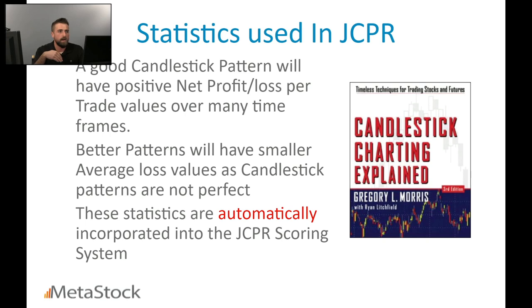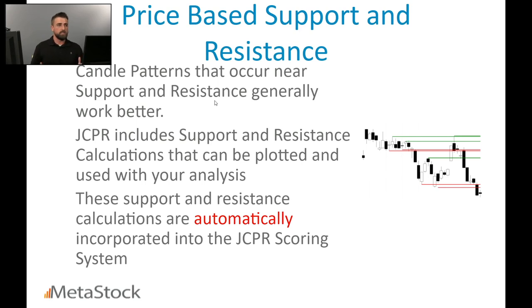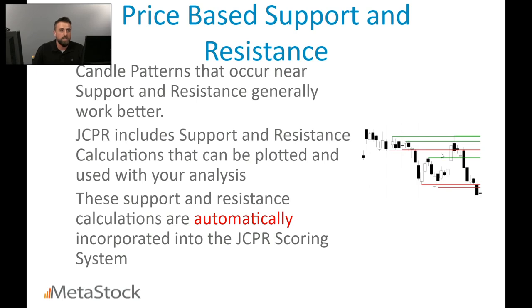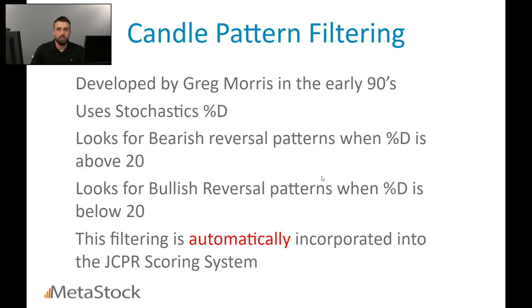He's looking for things that have a higher net profit and a smaller loss per trade. The add-on also uses unique support and resistance levels that it automatically draws on your charts. You can see on screen it has automatically placed different support and resistance levels. When a candlestick pattern comes right off one of these levels, that can mean a stronger indication of price movement. This is automatically incorporated into the scoring system that comes with the add-on — it's taking a lot of stuff into consideration in the background.